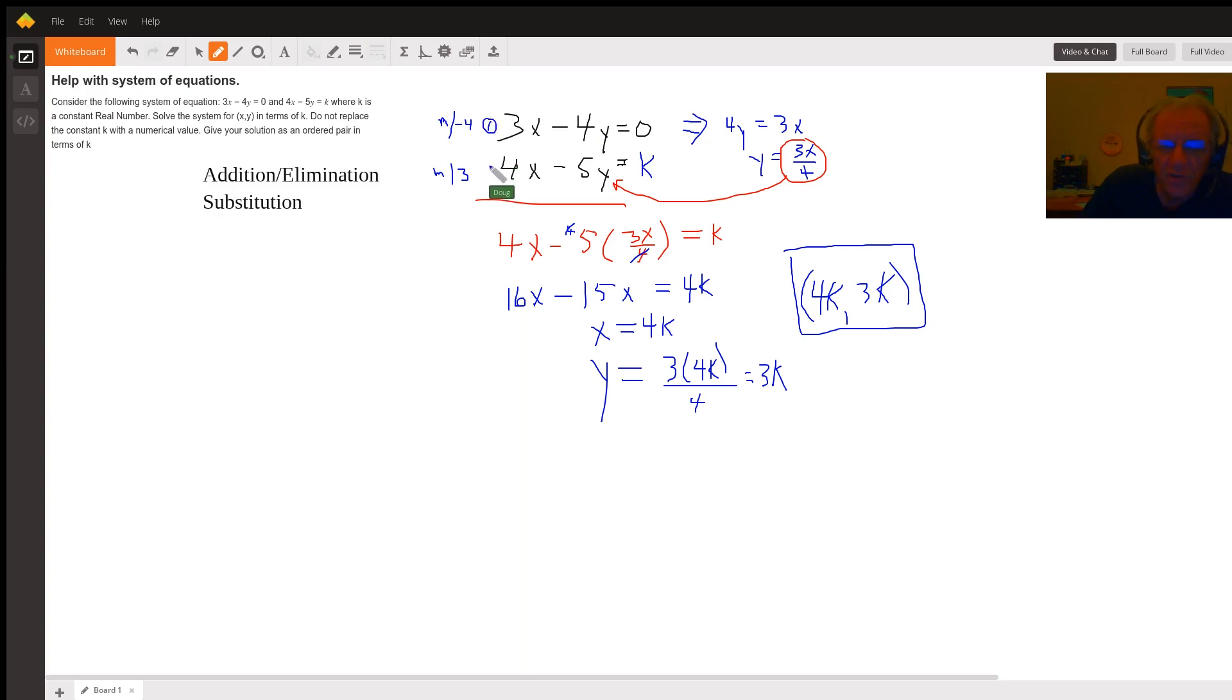In what I just went through, I used the substitution method. The same thing would work if you used addition/elimination. When you multiply the second equation by 3, you get 12x - 15y = 3k.